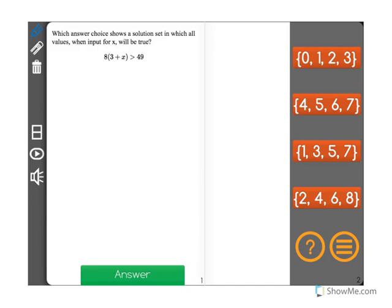Which answer choice shows a solution set in which all values, when input for x, will be true? So we have this inequality here. I'll write it a little bit bigger. 8 times 3 plus x is greater than 49.